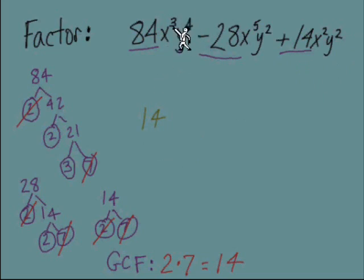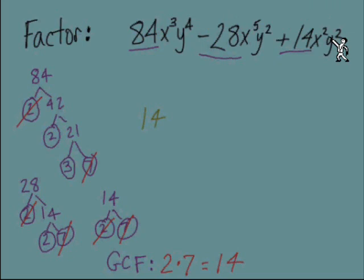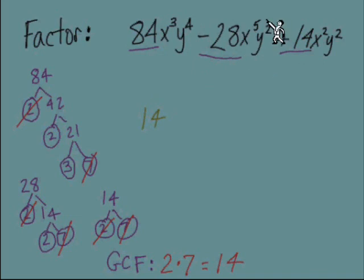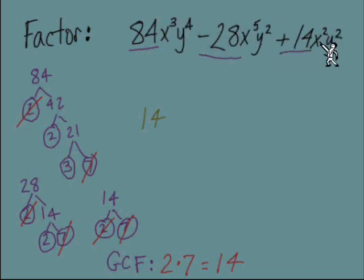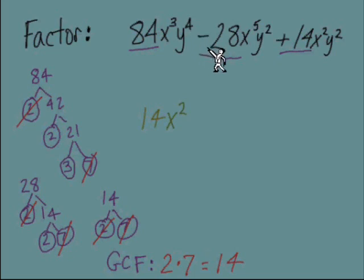Now let's talk about the variables. We have x³ in the first term, x⁵ in the second, and x² in the third. We're thinking about how many x's we can take from all three places — it has to be the same number from each, and we take until we run out. The third term only has two x's, so that's where we run out. The shortcut: find the smallest exponent. Out of 3, 5, and 2, the smallest is 2, so we have x² in the GCF.